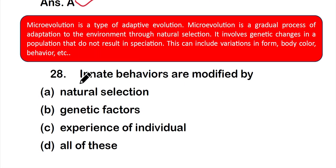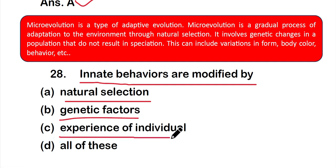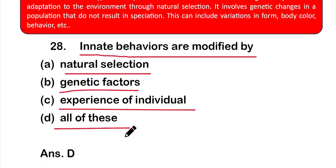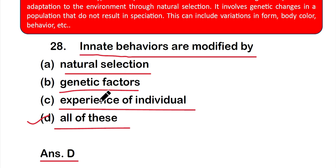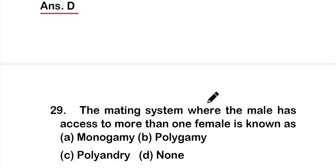Question number 28: Innate behaviors are modified by — option A: natural selection, option B: genetic factors, option C: experience of individual, or option D: all of these. The correct answer is option D — all of these. Innate behaviors are modified by natural selection, genetic factors, and experience of individuals.